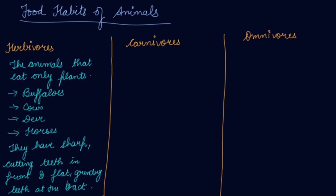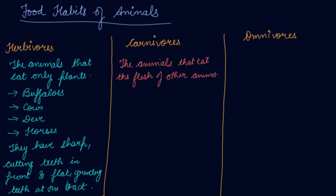Now let's talk about carnivores. Carnivores are animals that eat only flesh or other animals. Animals that eat the flesh of other animals are carnivores. For example, lions and tigers — they need flesh.